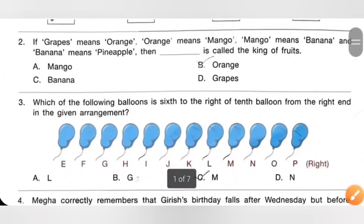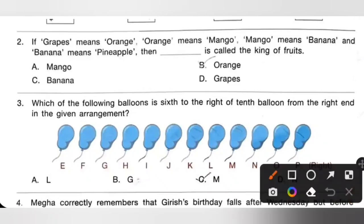Question 2: If grapes means orange, orange means mango, mango means banana, and banana means pineapple, then what is called the king of fruits? We know mango is called the king of fruits. Since orange means mango, orange is called the king of fruits. Option B is the correct answer.